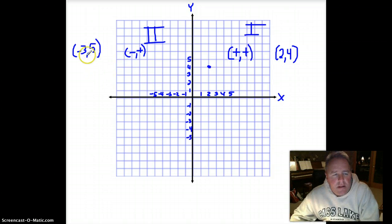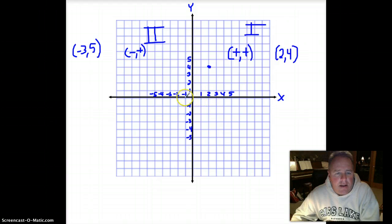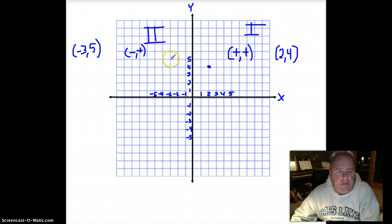Okay, so again, my first point is a negative three. So I have to go along the x-axis to a negative three and up to a positive five. That would be negative three, positive five. So anything in the second quadrant, negative x, positive y.